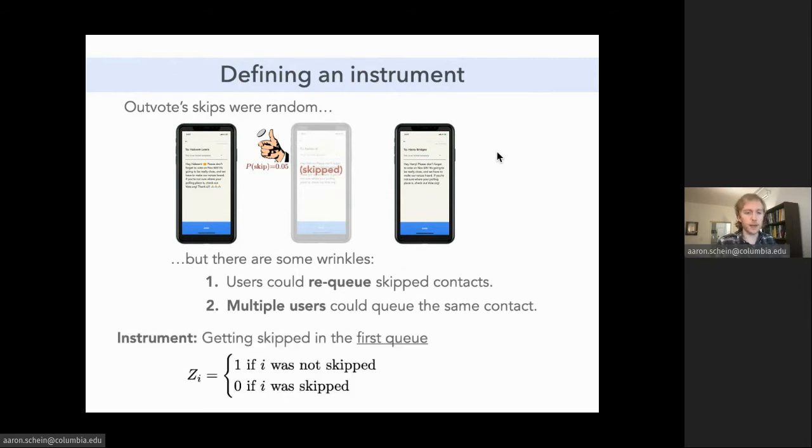Second, multiple users could queue the same contact. At a high level, there are multiple queuing events that are associated with the same contact. And so we have to be careful in how we map those to a single random assignment. We're going to define this instrument to be one if the subject was not skipped the very first time they were queued by any user and zero otherwise. We're going to interpret that as saying subject I is assigned to receive the treatment if they are not skipped in their very first queue, and they are assigned to not receive the treatment or assigned to be a control otherwise.